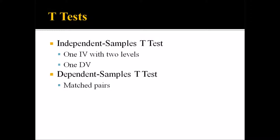Let's get started with t-tests. An independent samples t-test is used when you have one independent variable with two levels and one dependent variable. So let's say that you want to use CBT to treat depression and measure the level of depression using a depression inventory. The independent variable could be treatment, and the two levels would be those treated with CBT and those that weren't — otherwise known as a treatment and control group. The measure used to determine depression levels would be your one dependent variable.